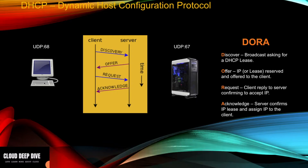In the Discover step, whenever a client comes to your network, it sends a discovery request saying it is new to the network and asking for an IP address to be assigned. That request goes to all devices on the network; devices that are not DHCP servers reject it, but the DHCP server listens and says it can offer an IP address — that is the Offer step. Once the IP is offered, the client sends a Request to get that IP allocated. Once the request is made, the server acknowledges it, marks the IP as assigned to the client, and sends an acknowledgement — completing the DORA process.